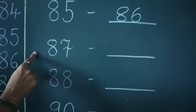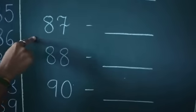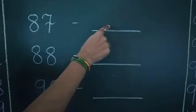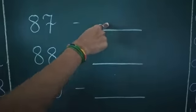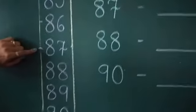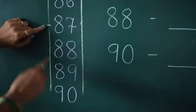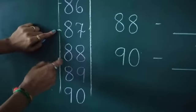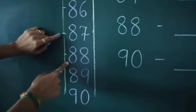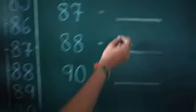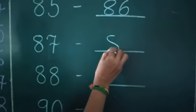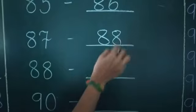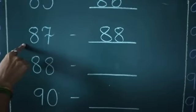Next, number 87. Which number comes after? Look at here — number 87. Which number comes after? 88. So number 88 comes after number 87.